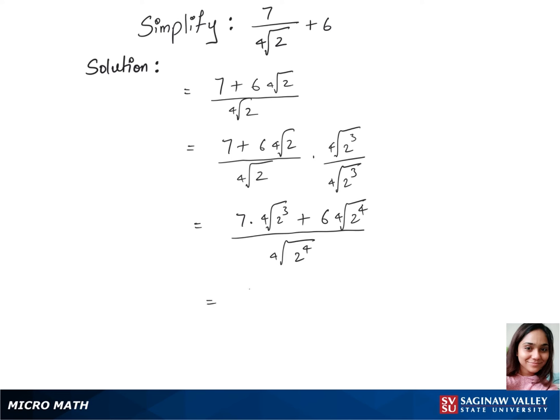Now we have 7 times 4th root of 2 to the power 3 is 8 plus 6 times root 4 and power 4 gets cancelled and now we are left with 2 over the same thing in the denominator part 2.